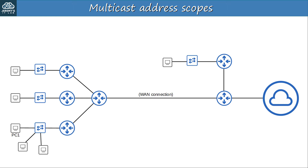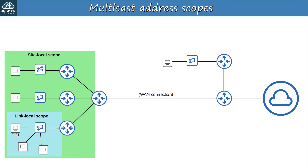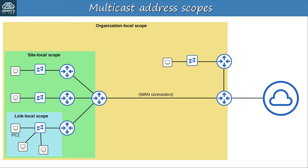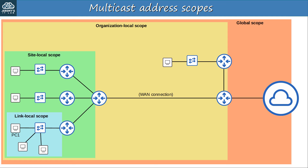Here's a diagram to help visualize the different scopes from PC1's perspective. A link-local multicast reaches all devices on the local subnet. A site-local multicast reaches wider — but not over a WAN to another site. An organization-local multicast might reach devices including another office connected via a WAN link. The global scope can reach beyond the organization itself. Aside from interface-local and link-local, the actual boundaries of each scope must be defined by the network engineer — multicast configuration is way beyond the CCNA.